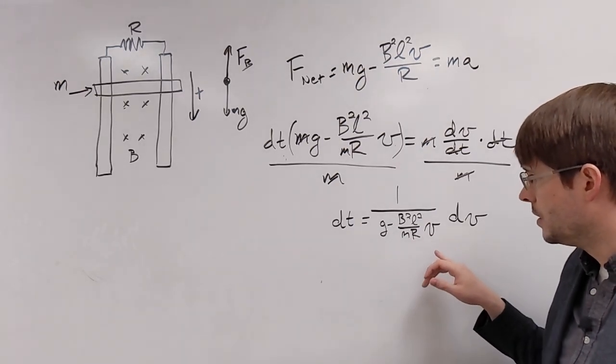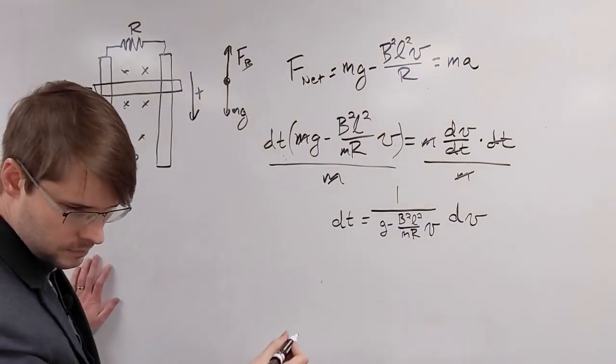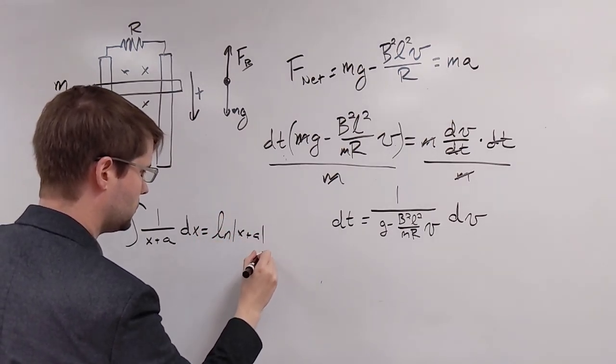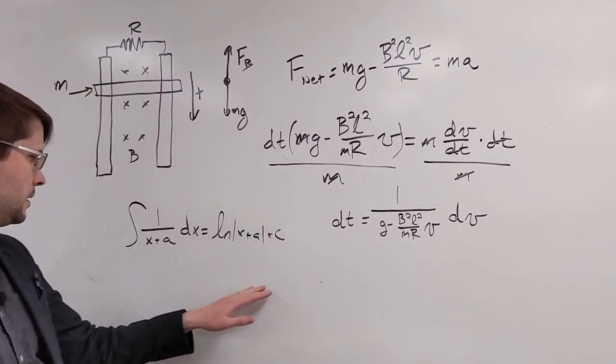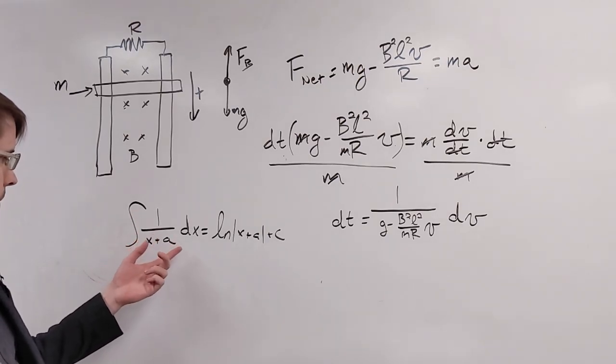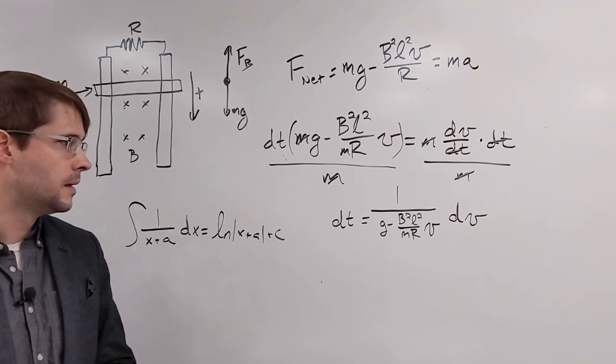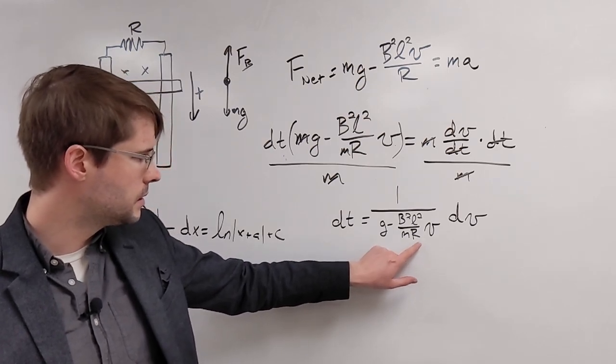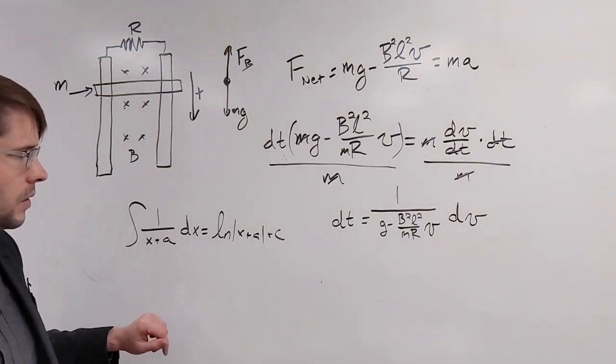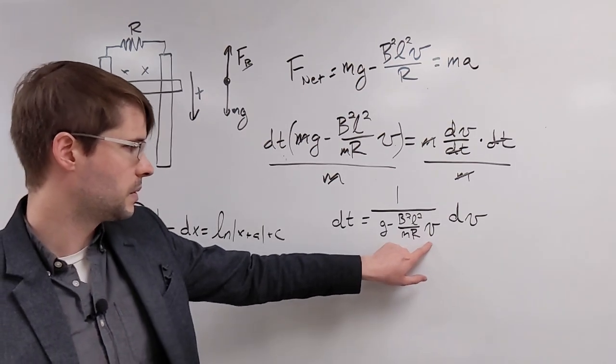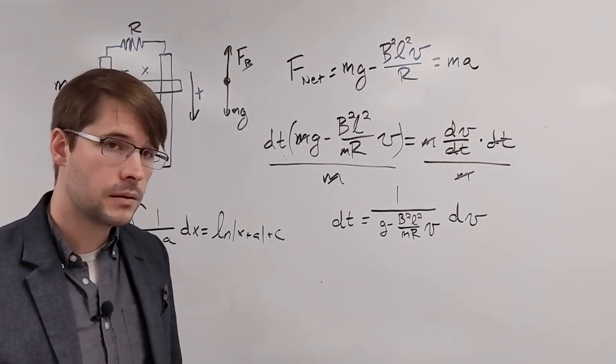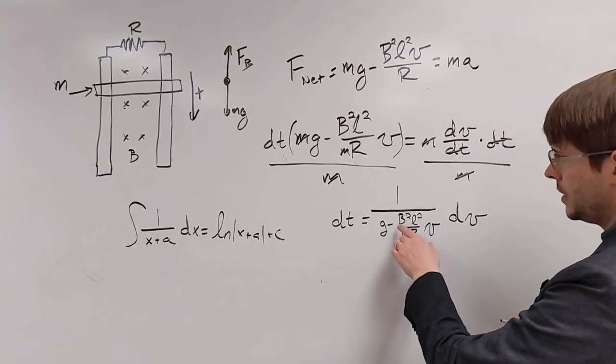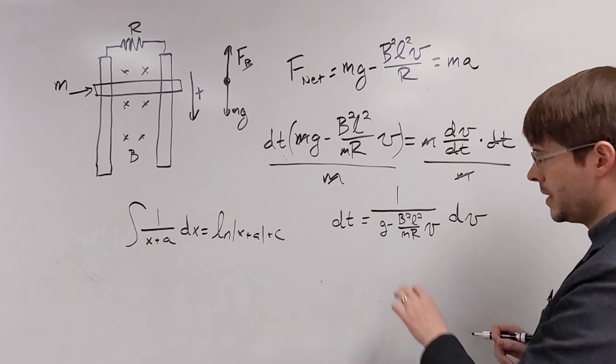Now I'm going to use some identities here to help us in this case. This is the main identity that I'm going to be using. 1 over x plus a. The integral of 1 over x plus a dx is equal to the natural log of x plus a. And so if you kind of see here, this almost looks a little like that. So I'm going to do a little bit of manipulation to get this so that it looks pretty similar to that. So this doesn't have a coefficient in front of it. So I'm going to do some multiplication to make sure that this v doesn't have a coefficient in front of it.